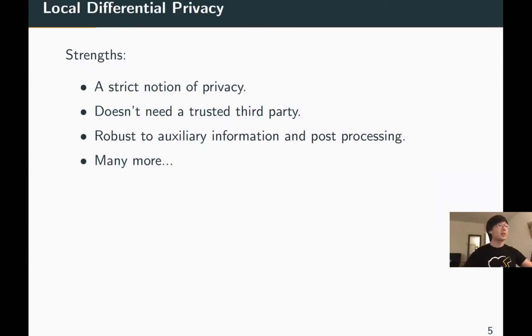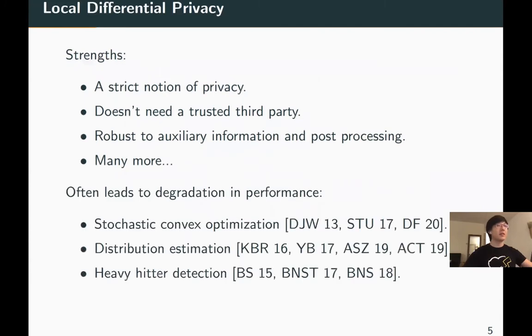However, due to the required randomization of the data, it often leads to degradation in performance for many statistical tasks, including stochastic convex optimization, distribution estimation, and heavy hitter detection. How can we relax the requirement without reducing the nice privacy guarantee we have?